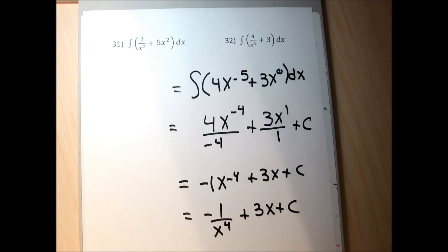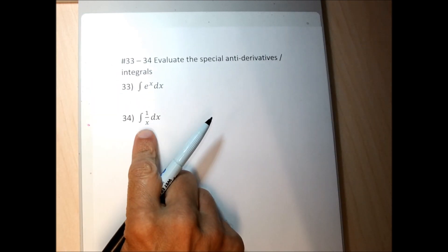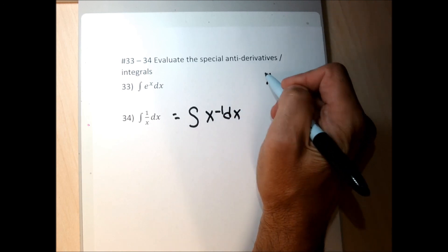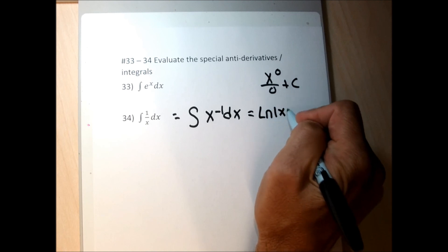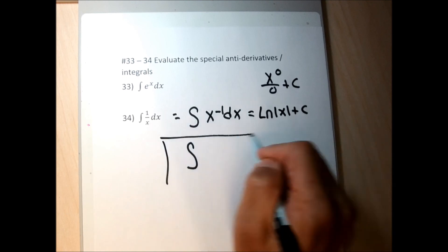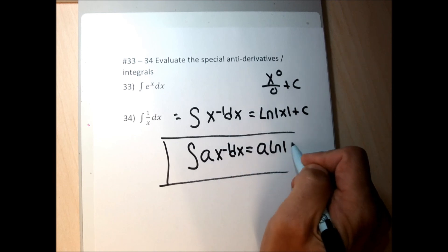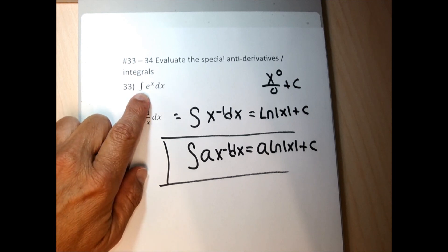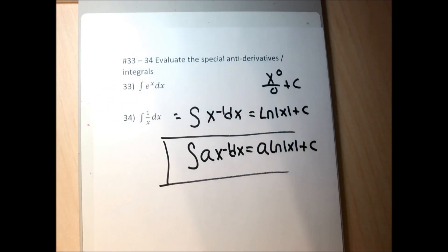Problem 31: the integral of 1 over x is the same as the integral of x to the negative 1 dx. If you add 1 to the exponent and divide by the new exponent, you get garbage — zero in the denominator. So when the exponent is negative 1, the integral is the natural log of x plus C. More powerfully, the integral of any number times x to the negative 1 is that number times the natural log of x plus C.